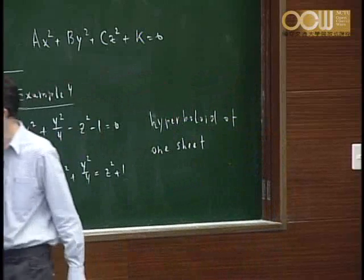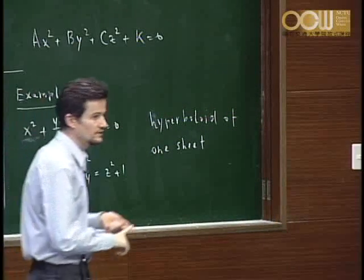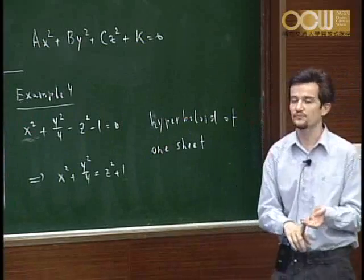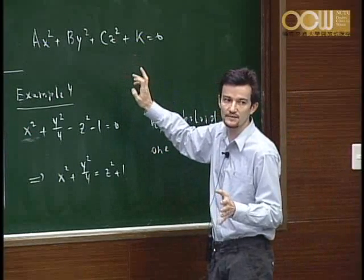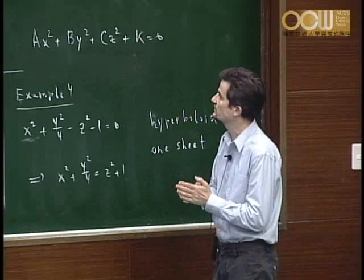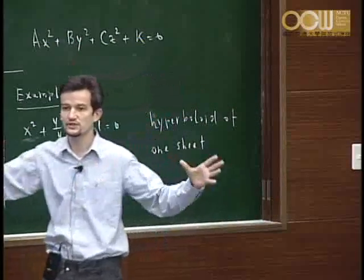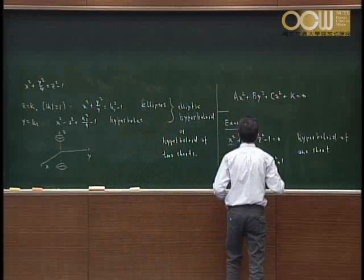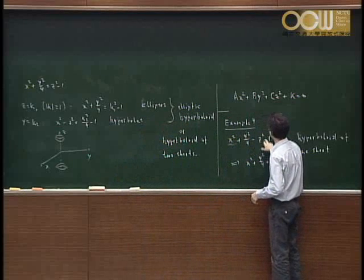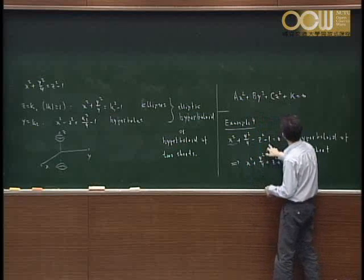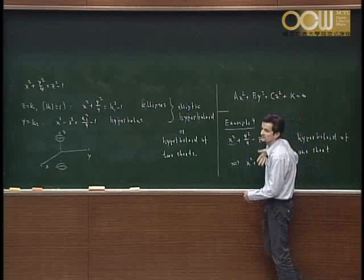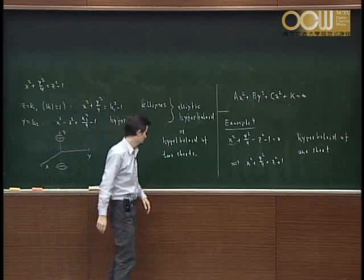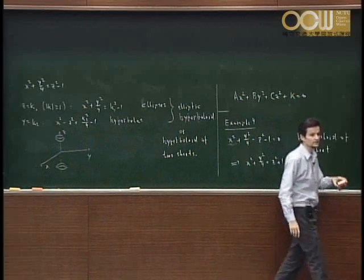We now have four types: the cone, the ellipsoid, the hyperboloid of one sheet, and the hyperboloid of two sheets. These are all types arising from the first equation. Other seemingly different cases just correspond to different coefficients — stretching along coordinate axes — or different assignments of the two negative signs, which just amounts to interchanging coordinate axis names.